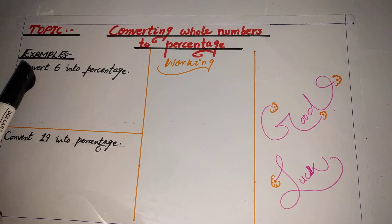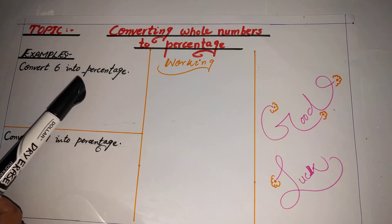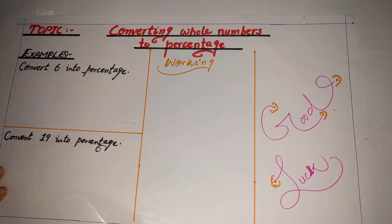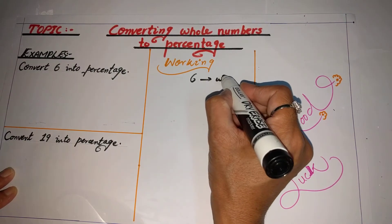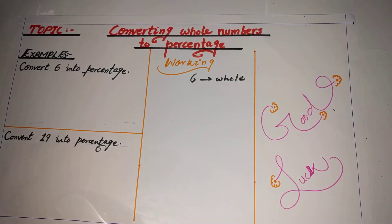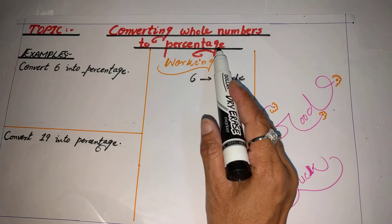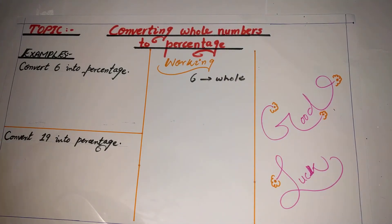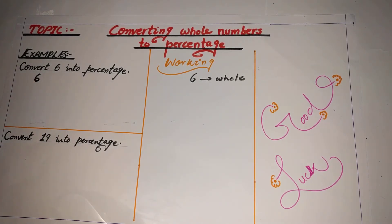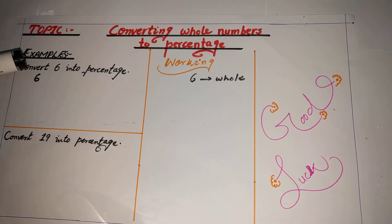Example: convert 6 into percentage. 6 is our whole number. We have to convert this whole number into percentage. According to the steps, 6 is our given whole number. Firstly, we will convert this whole number into fractional form, and to do that we will multiply and divide this given whole number 6 by 100. We will put the equal sign, write our whole number, then multiply it by 100 and also divide it by 100.